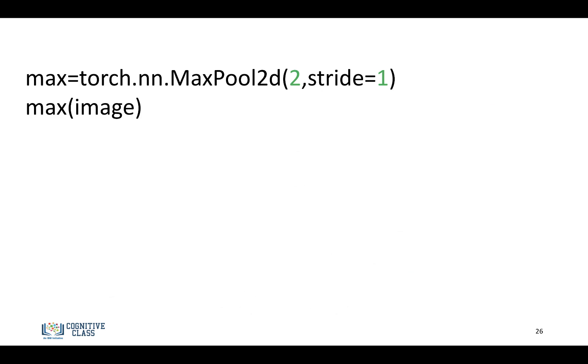So in PyTorch, it's pretty easy. You create a max pooling object. And you set the size of the area, in this case, 2. You set a stride parameter. And then you apply it to your image. And we get the following results.